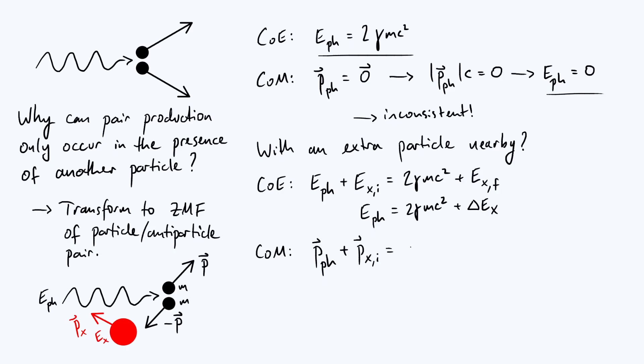After the pair production has occurred, the particle-antiparticle pair has zero momentum overall because of the frame that we're choosing to work in, but the difference now is that particle x is still going to have some other momentum right after the interaction has taken place, and so we can rearrange that to get momentum of the photon is just zero plus the change in the momentum of particle x. Now remember that the energy of the photon is the speed of light times the magnitude of the momentum of the photon.